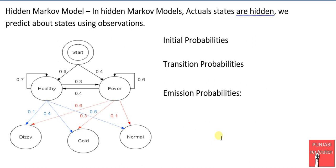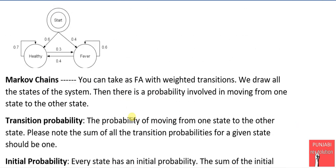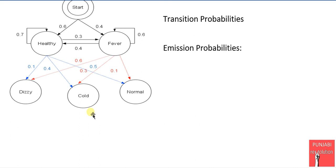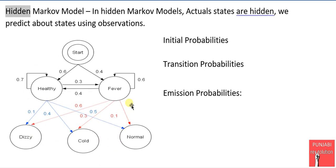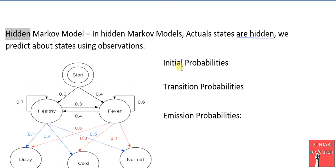Dear students, now we discuss about Hidden Markov Model. It is called hidden because in this model the actual states are hidden from the observer. We calculate the hidden states by using the observations. These observations are normal, cold, and dear. In a Markov chain we just had states, but now we have something more — observations. The concept of Hidden Markov Model is that by using these observations we predict about the hidden states.